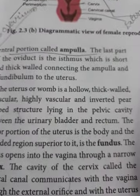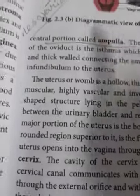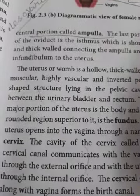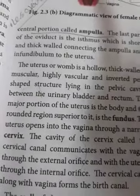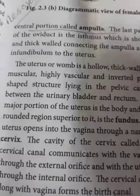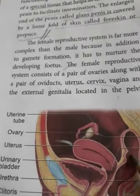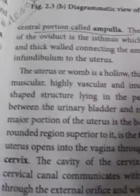The isthmus is a short, thick-walled segment connecting the ampulla to the uterus. The uterus, or womb, is a hollow, thick-walled, muscular, highly vascular, and inverted pear-shaped structure lying in the pelvic cavity between the urinary bladder and the rectum, where undigested food is stored temporarily.